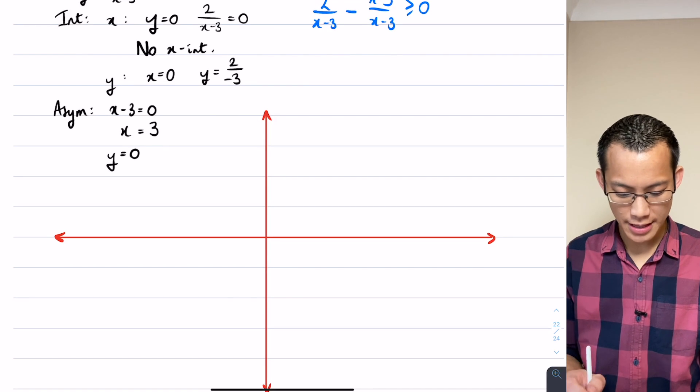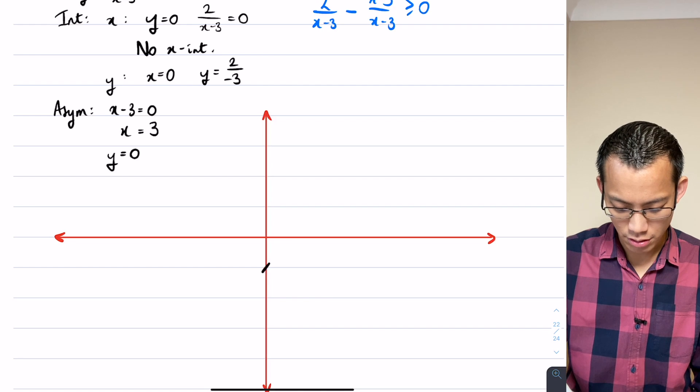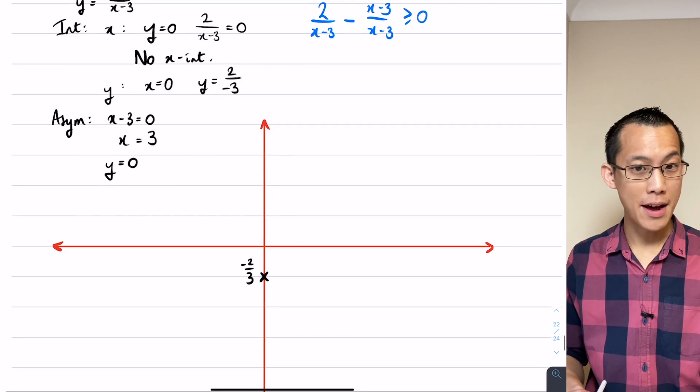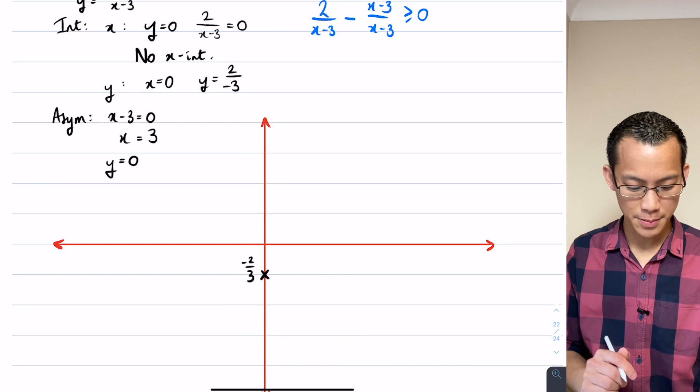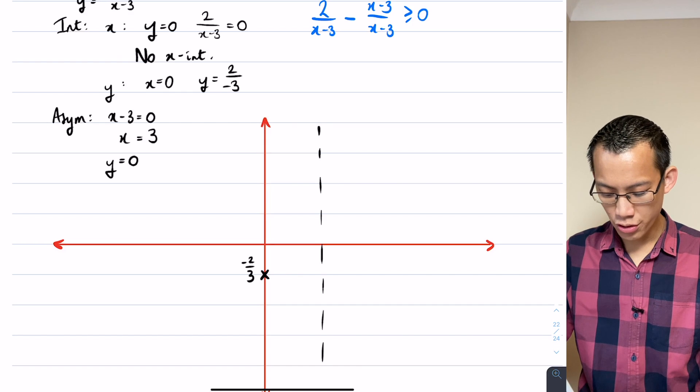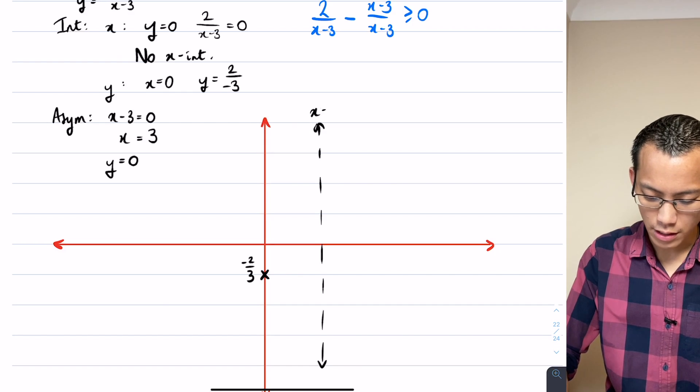Alright, so now let's roughly graph this thing. Let's go ahead and put on my intercept, I think I said it was minus two-thirds, so I'm just going to call that minus two-thirds. That was my y-intercept, there isn't an x-intercept and then I'm going to do my asymptotes. I've got one at x equals 3, which shouldn't surprise us, this is this horizontal translation that we've seen before, so x equals 3.